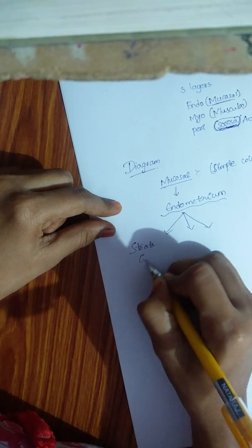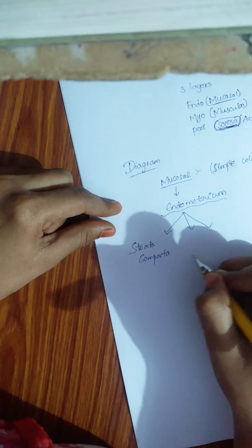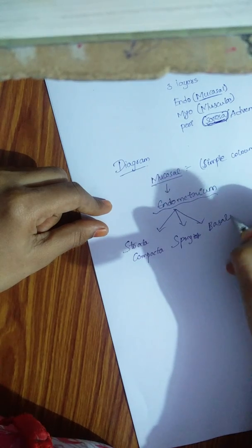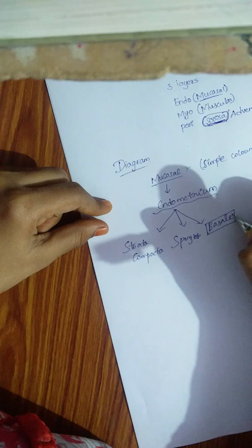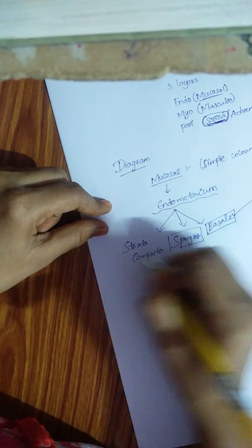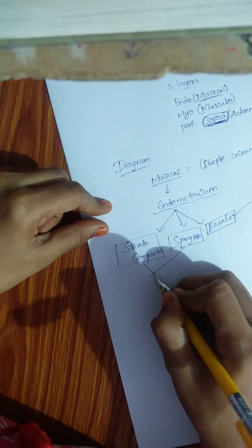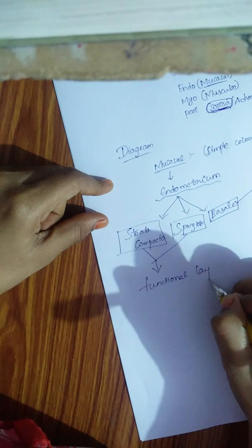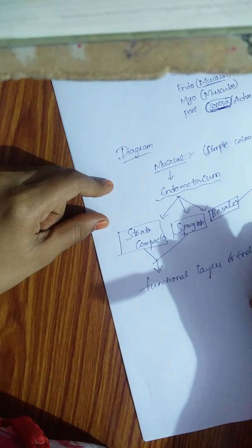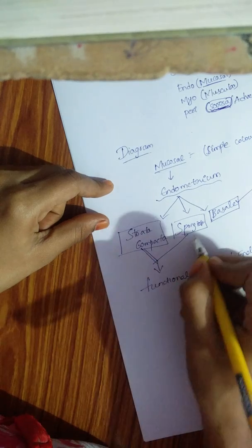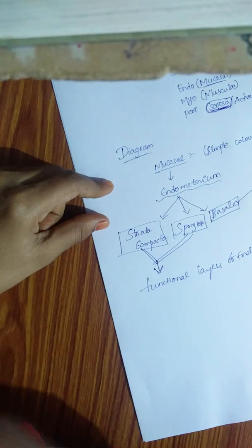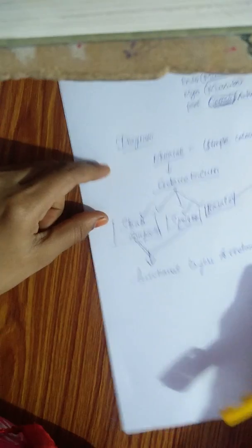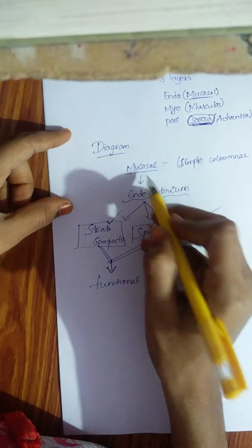The three layers of the endometrium are stratum compacta, stratum spongiosum, and stratum basale. Stratum basale is always present in the endometrium. Stratum spongiosum and stratum compacta are the two functional layers of the endometrium. These two functional layers are formed during the proliferative phase and are shed during menstrual periods.